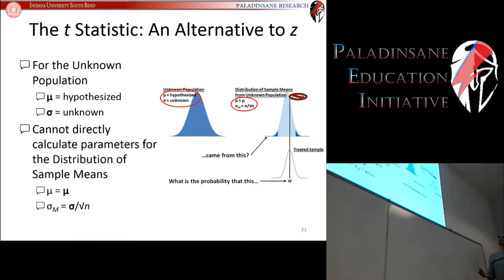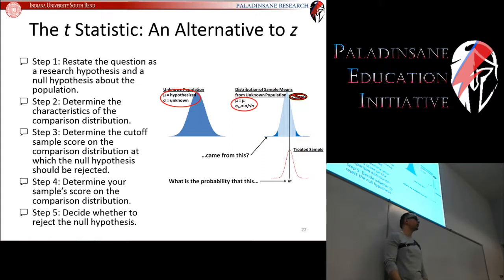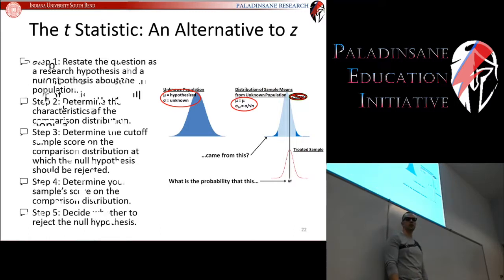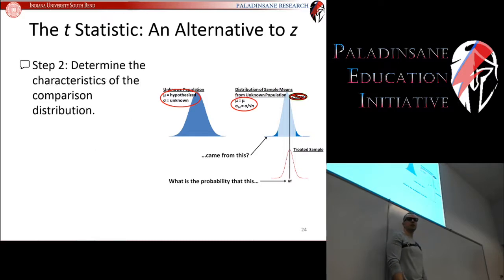Thankfully, with this change we're not going to have to make many changes to our five steps — and this will be a common theme for the rest of the semester. Step one — restating the question as a research hypothesis and null hypothesis about the population — does not change at all. Step two — determining the characteristics of your comparison distribution — is actually the big change. We're no longer going to have a distribution of z-scores; we're going to have a new distribution.